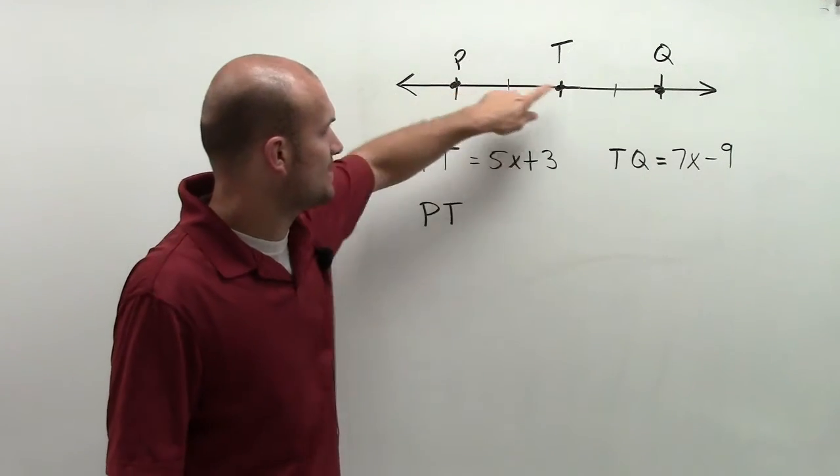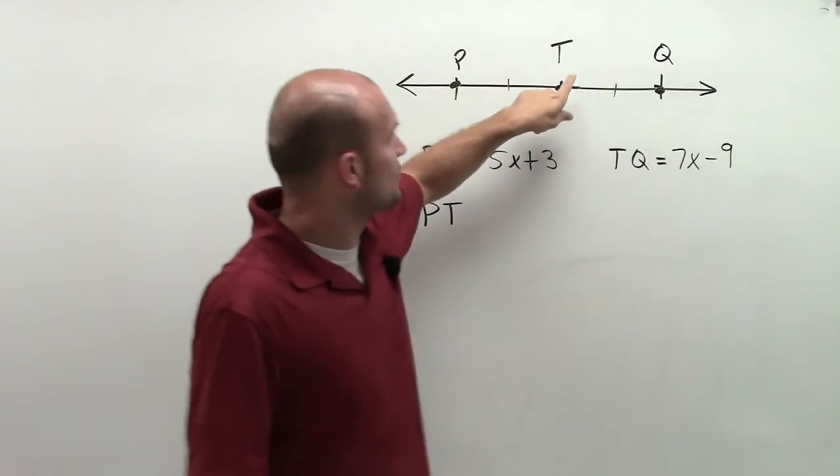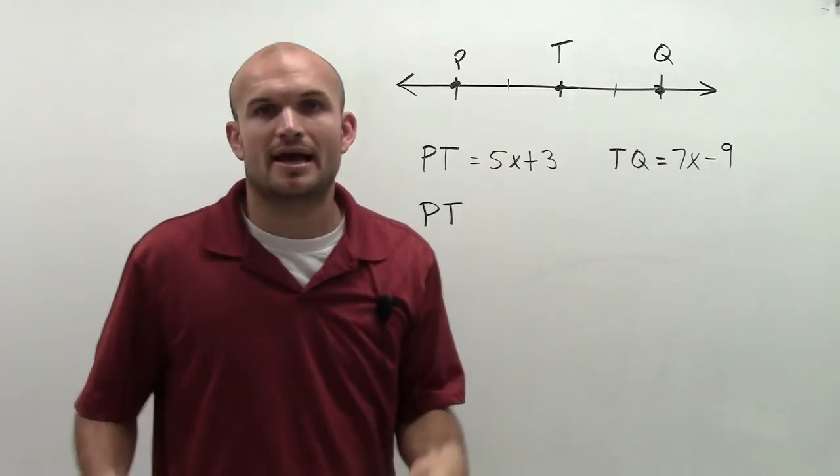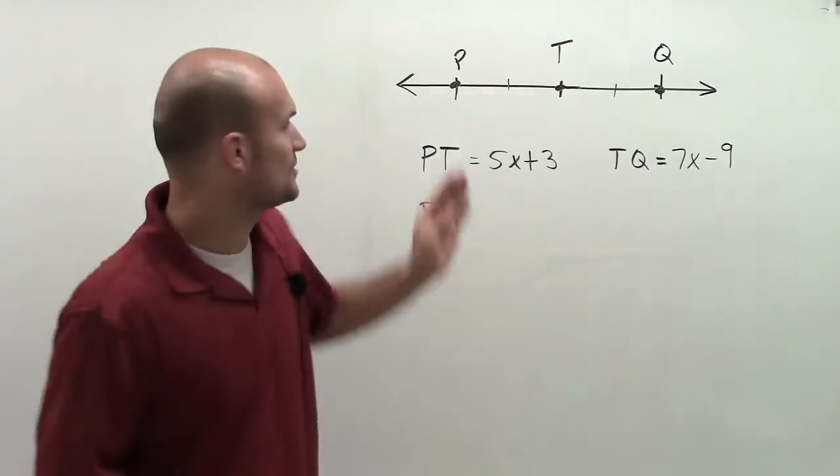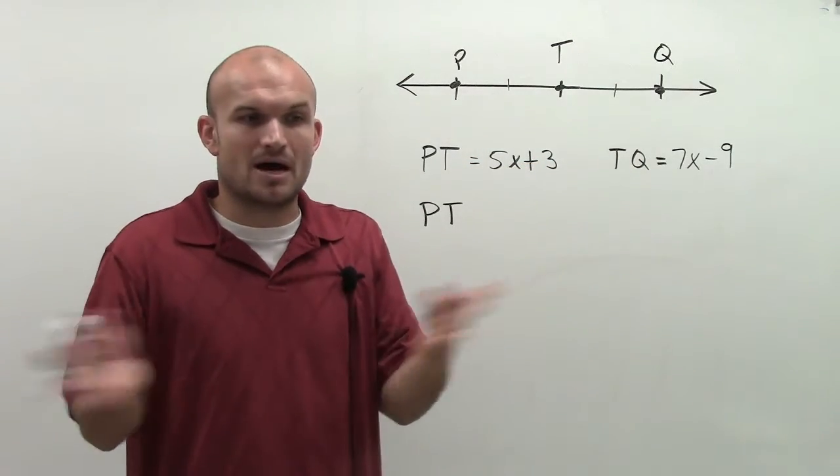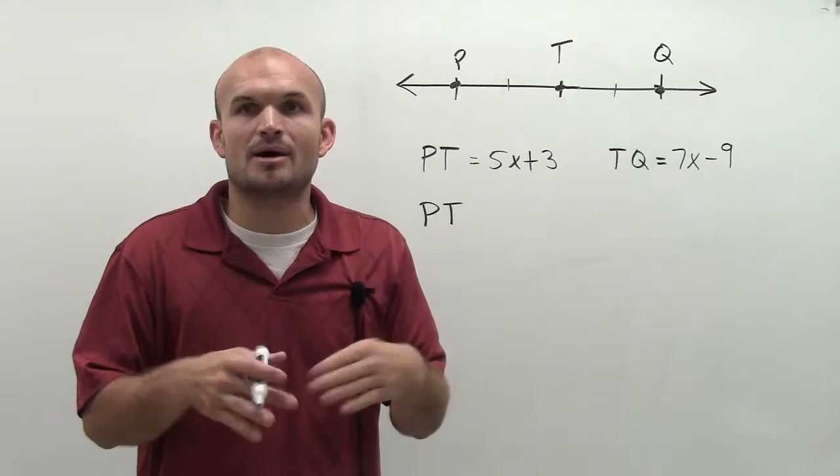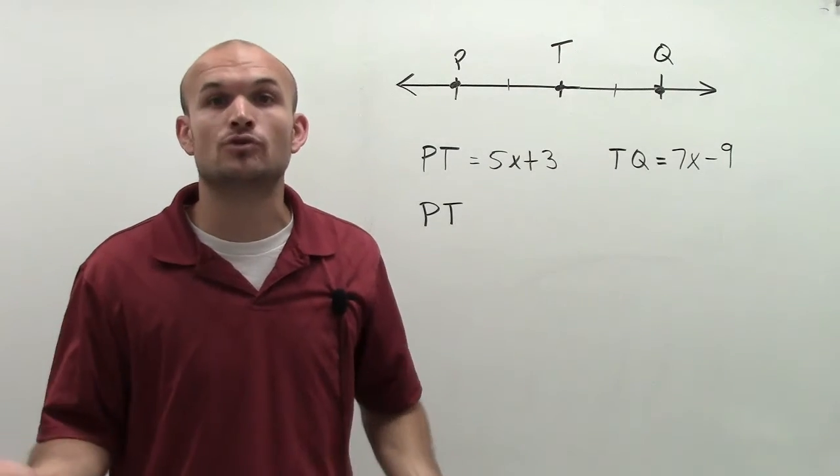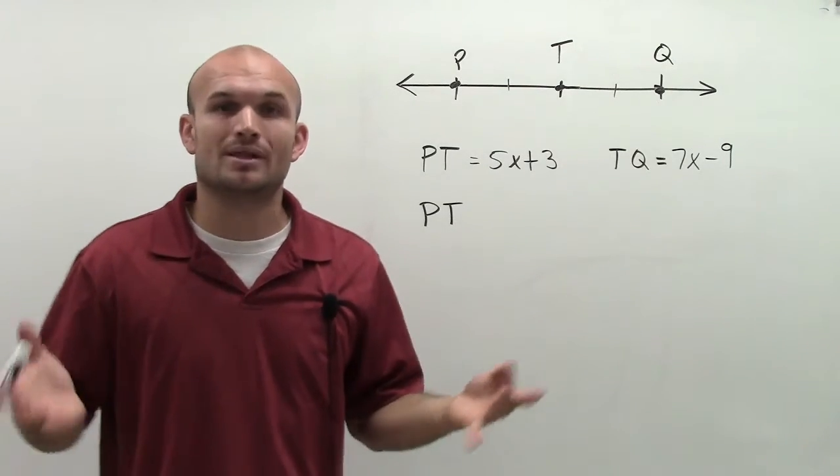So what I have is for the segment PT I have a little dash and for the segment TQ I have a little dash. And what that dash represents is their distances are exactly the same. That dash represents that those are congruent segments, meaning they are equal in length.